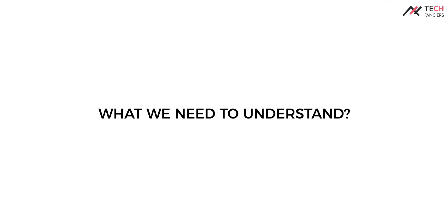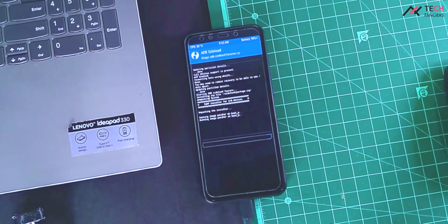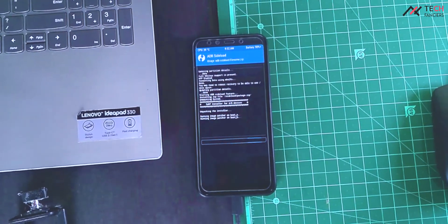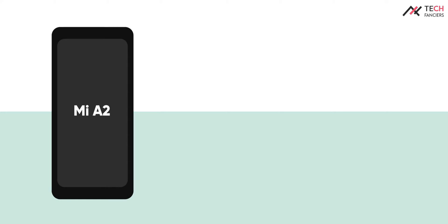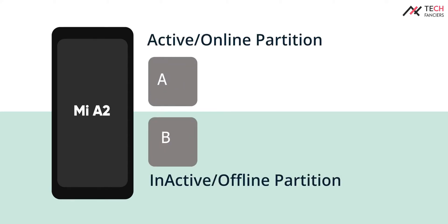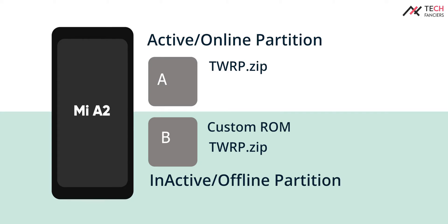What do we need to understand? When it comes to installing a custom ROM in MA-A2, we need to understand something, as our device has an A-B partition. I would describe it like this — online and offline. Custom ROMs will be installed in the offline partition. TWRP ZIP will install in both partitions, both online and offline. Gapps will be installed in the online partition. So if you want to install a custom ROM — for example, if you are in partition A and installing the custom ROM through TWRP — it will get installed in partition B. After installing it, you need to switch the partition and reboot to your custom ROM.